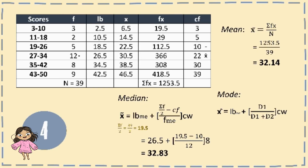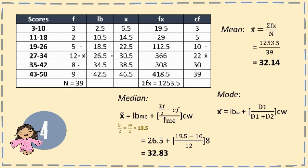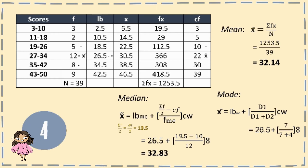Lastly, for the mode: the highest frequency is 12. The lower boundary for the modal class is 26.5 and the class width is 8. D1 is 12 minus 5 equals 7, and D2 is 12 minus 8 equals 4. So: 26.5 plus (7 over 7 plus 4) times 8 equals 31.59.